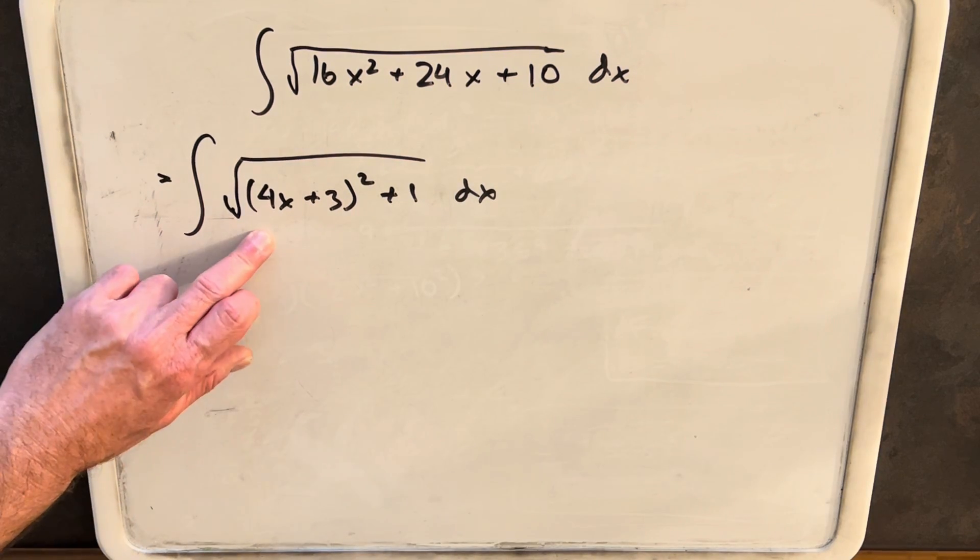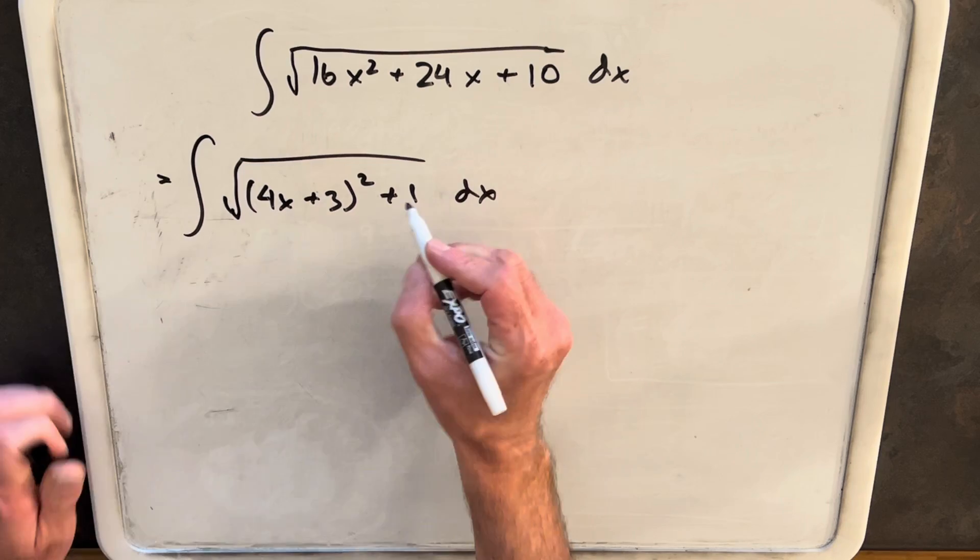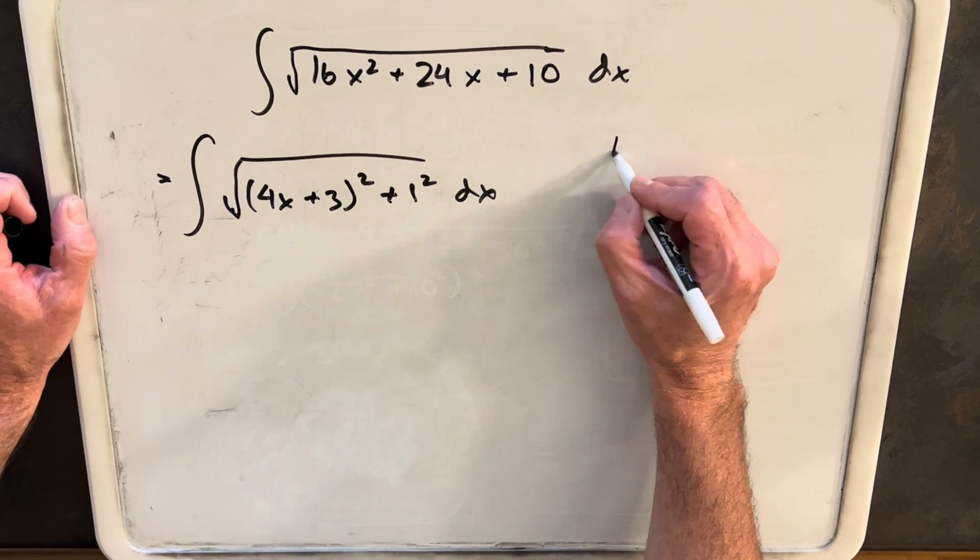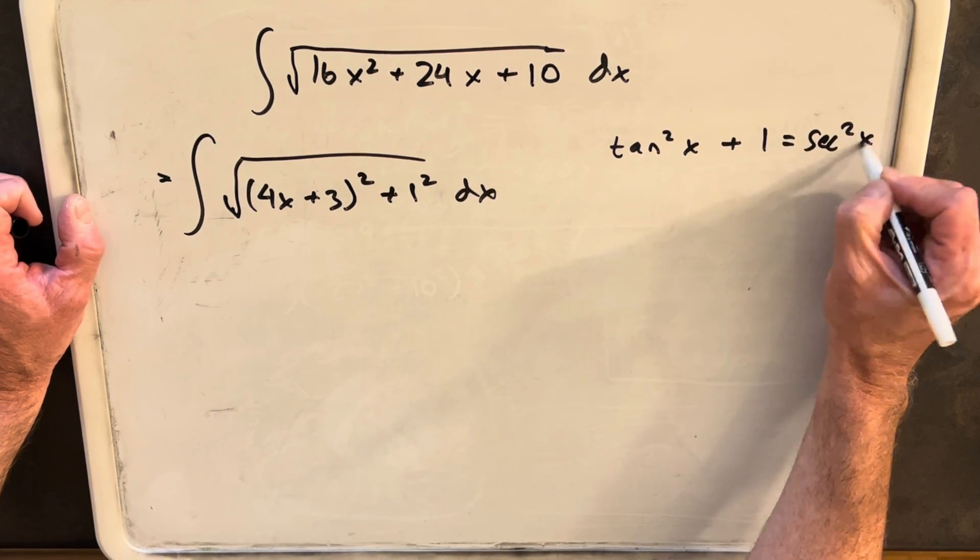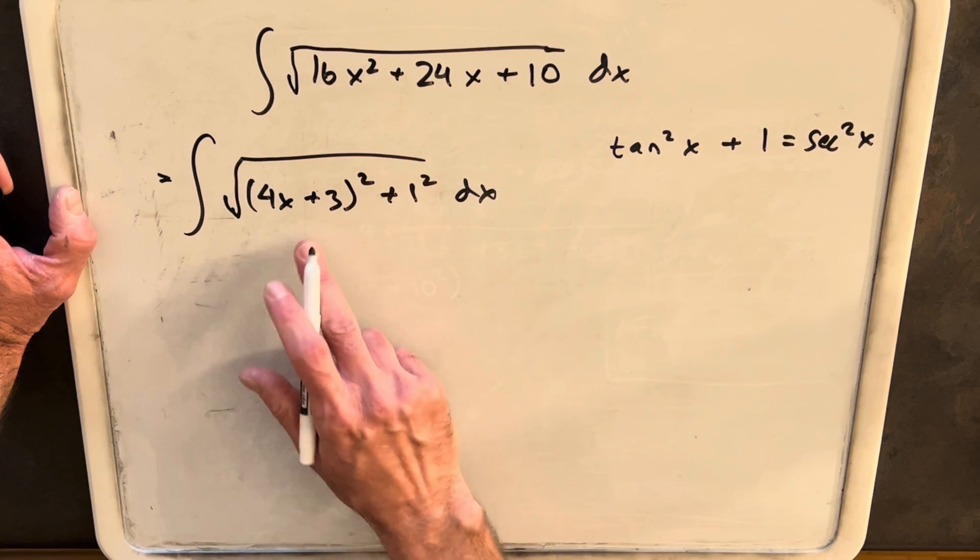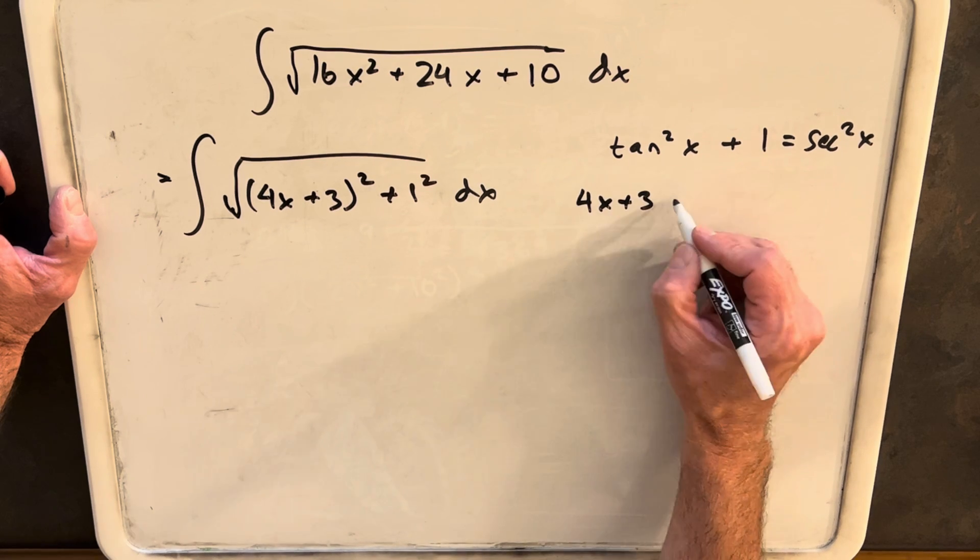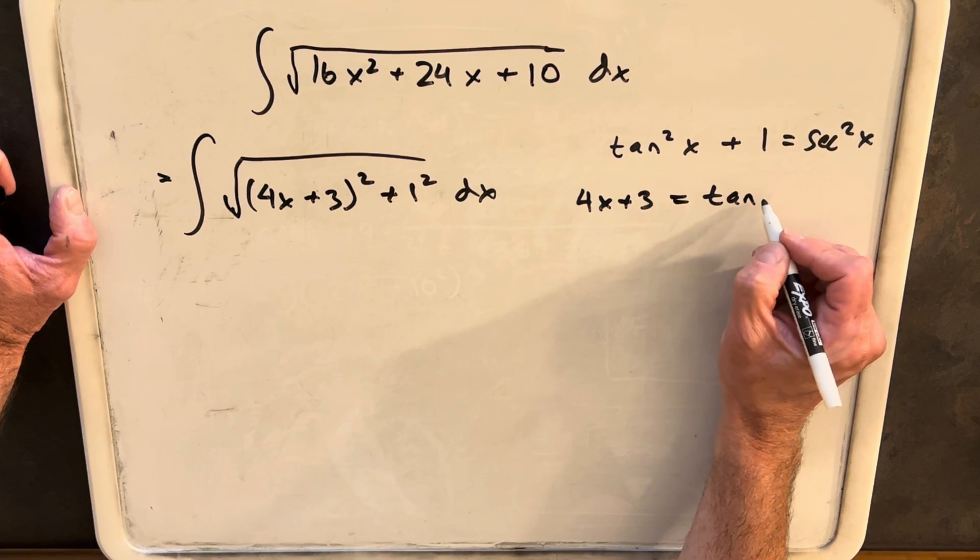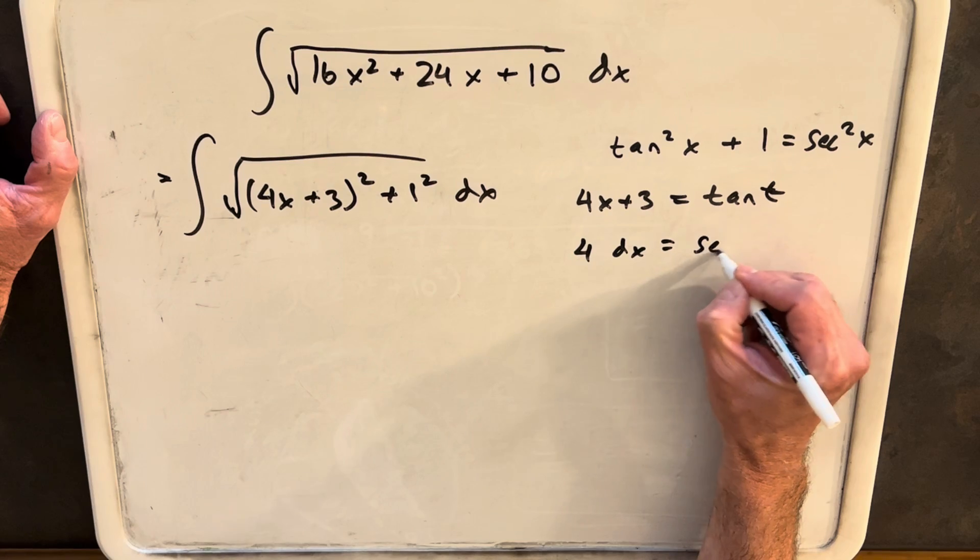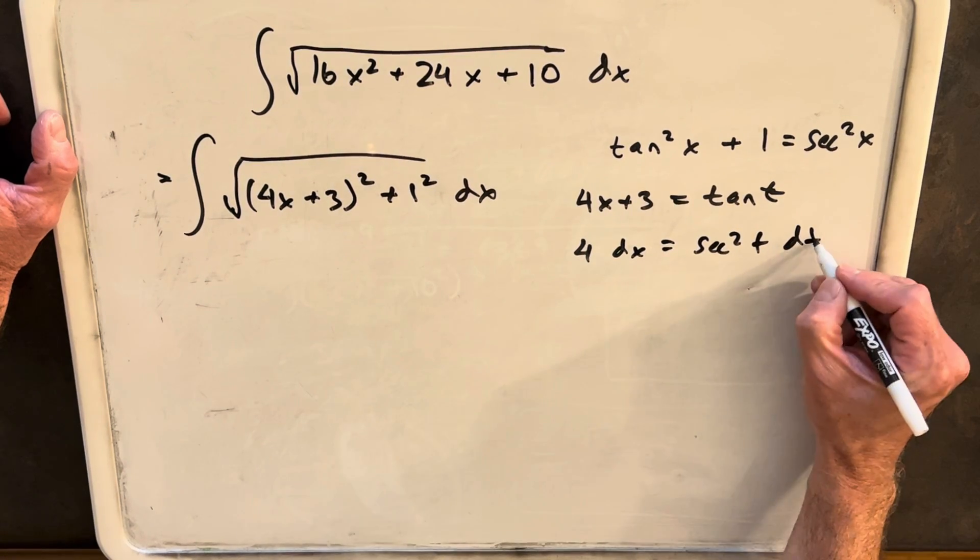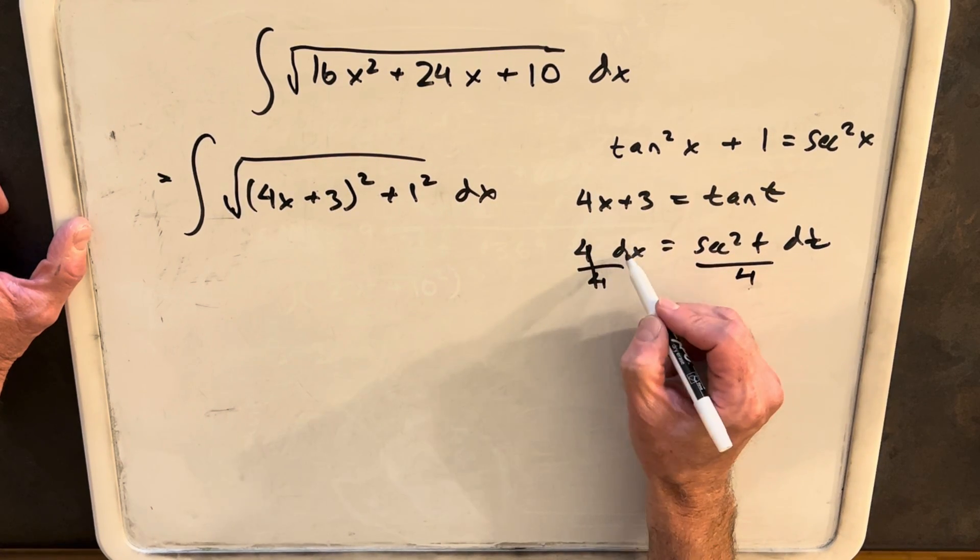And now is a good time to use trig substitution because we have it in a form of something squared plus 1, which also can be written as a square. And because we have this identity, we know that tan squared of x plus 1 equals secant squared of x. The right substitution here is going to be for tan x. So what we'll do is we'll substitute 4x plus 3 equal to tan of t. Then we'll take the derivative when we have on the left side 4 dx equals secant squared t dt. I'm just going to divide out the 4 so that we have a substitution we can use for dx.